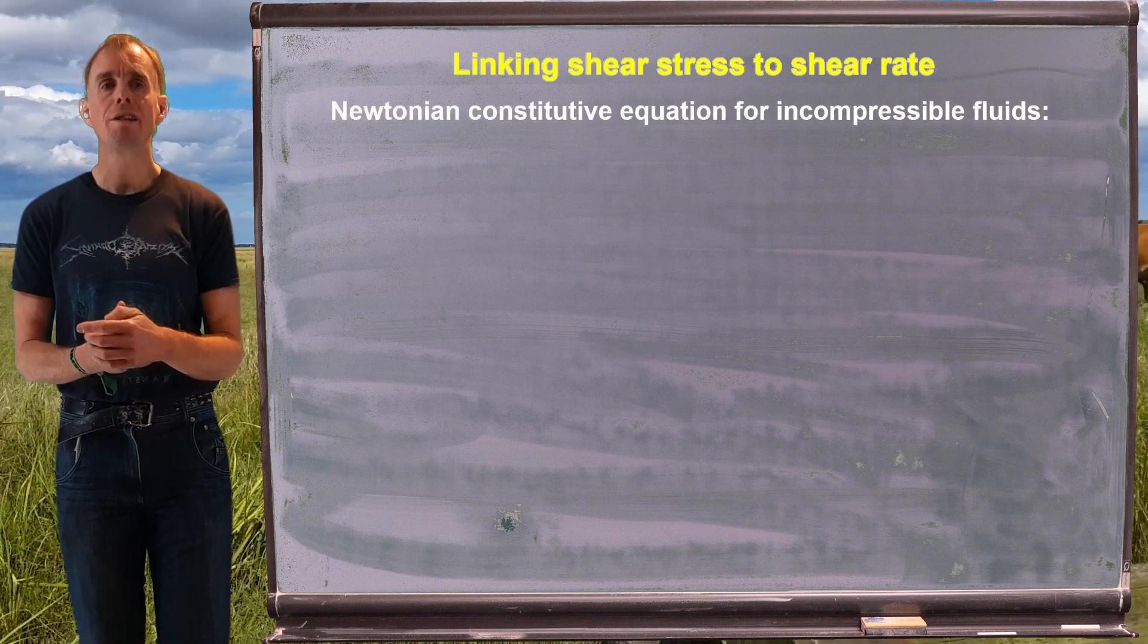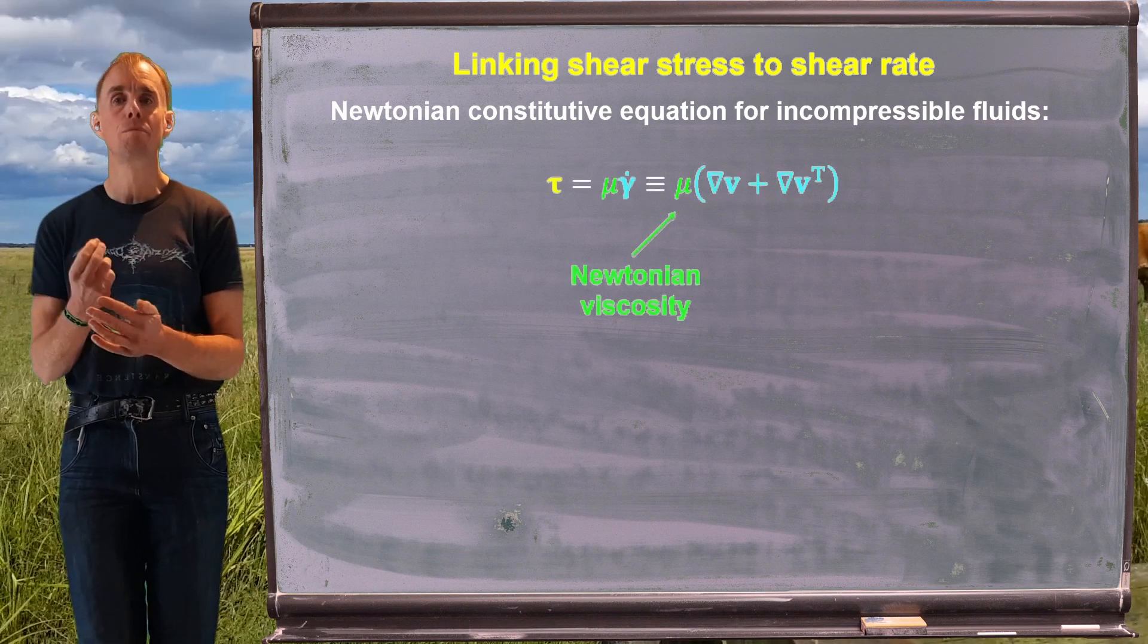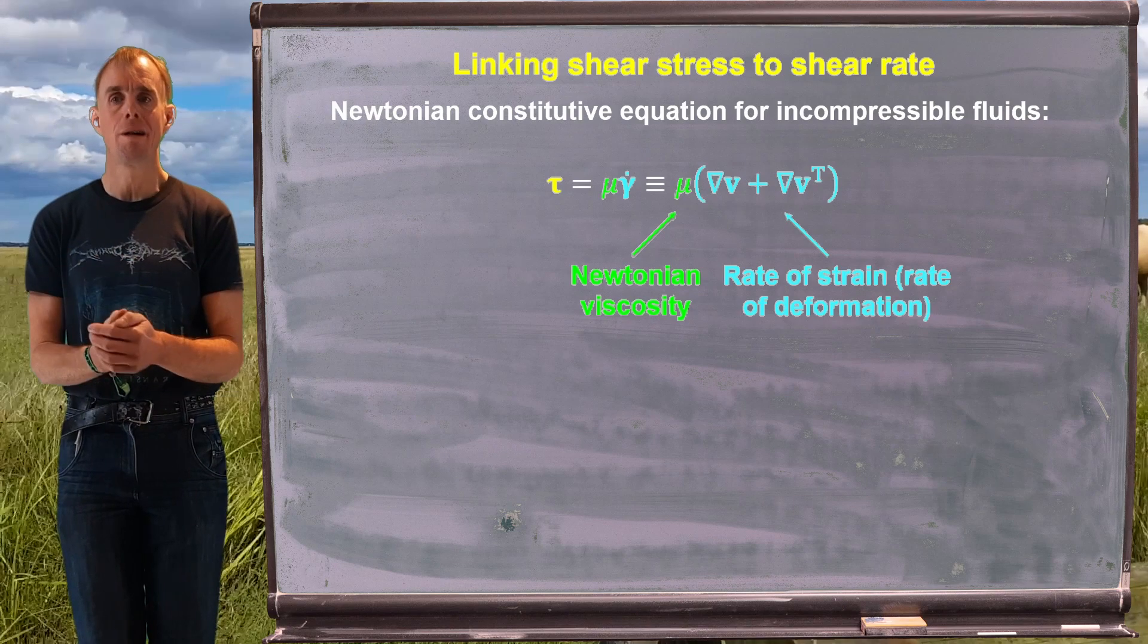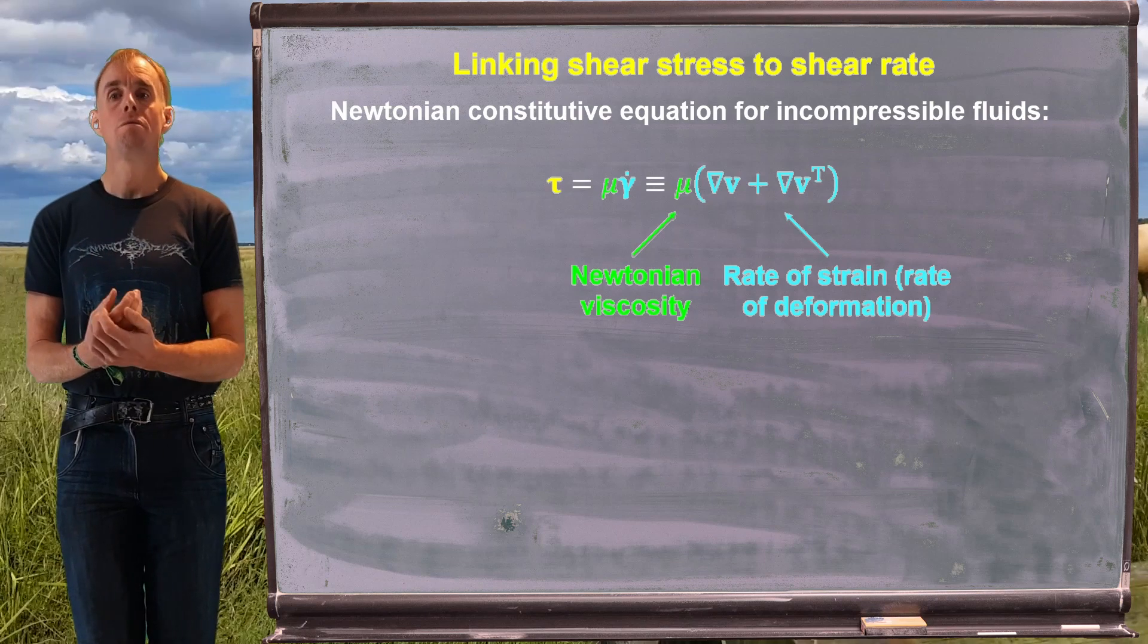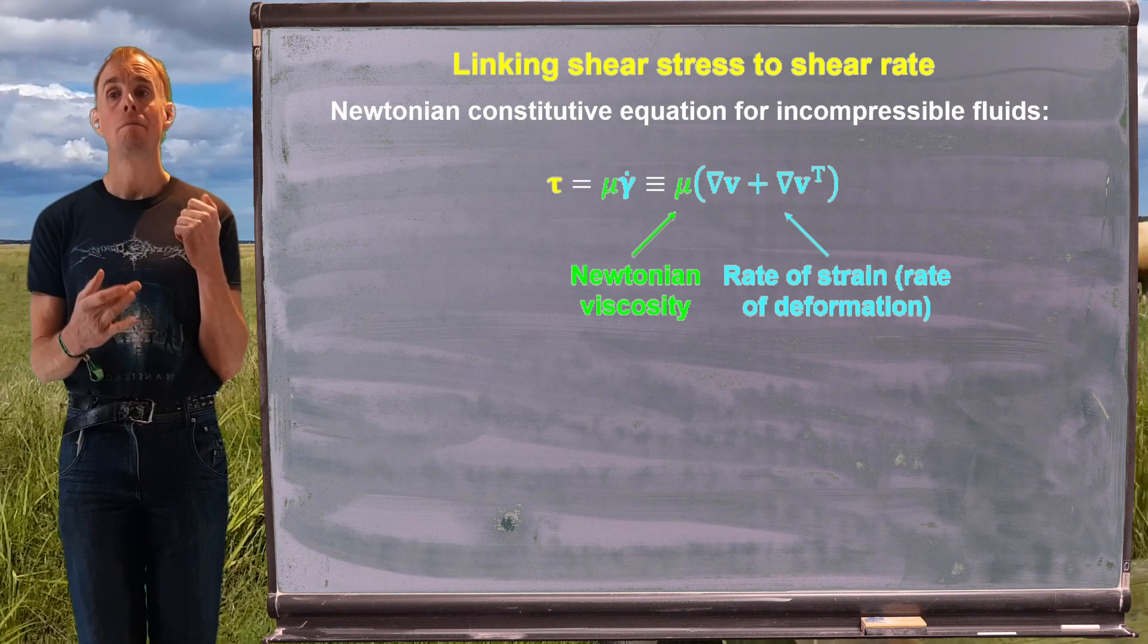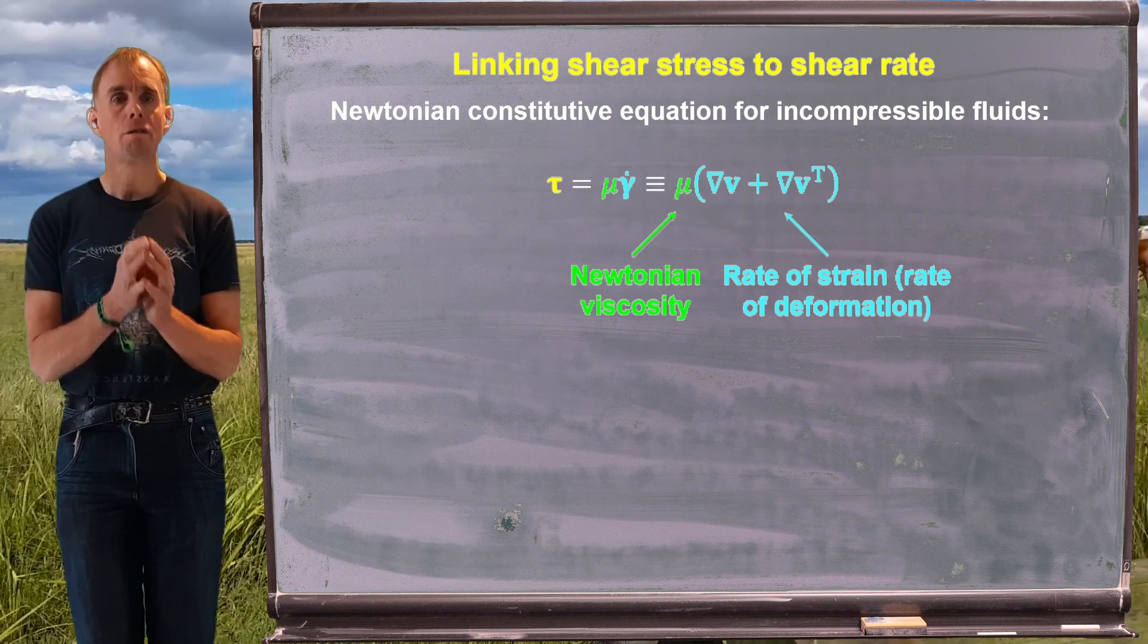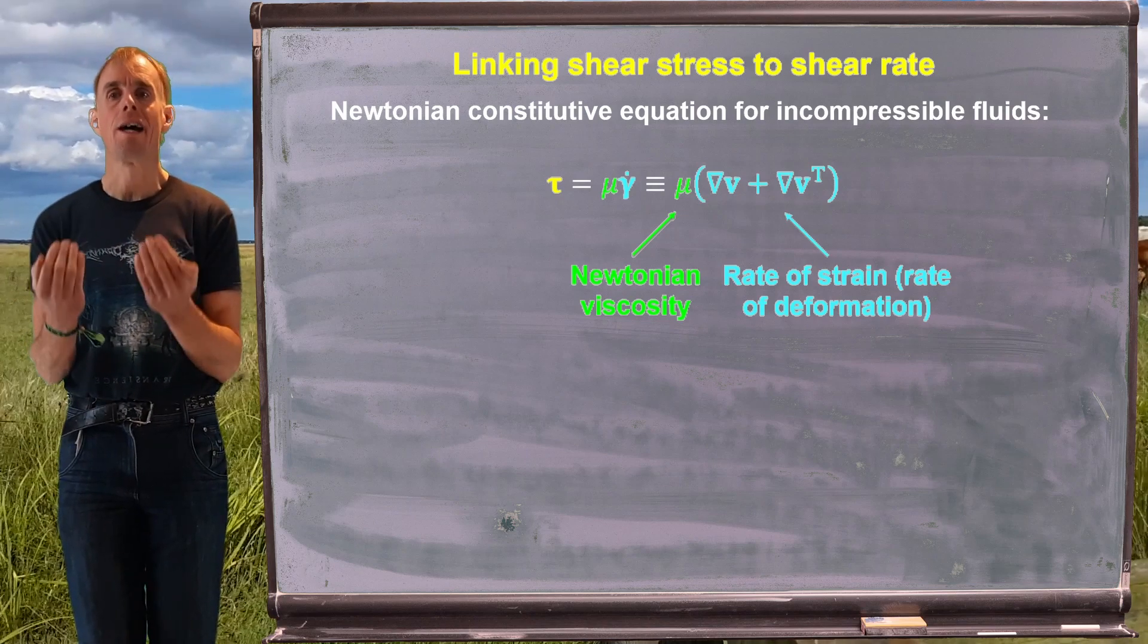So let's remind ourselves how in lesson three, we wrote the Newtonian constitutive equation for incompressible fluids. Big tau, the stress due to fluid deformation, is equal to viscosity times the rate of deformation. So the Newtonian viscosity in green is simply a scalar. The rate of deformation, the rate of strain, is second rank tensor. And we know it's symmetric, because we know stress is symmetric. So we saw in the previous lesson that the rate of strain tensor can be written as grad v plus grad v transpose. And it's the addition of grad v to its transpose that gives us that symmetry.